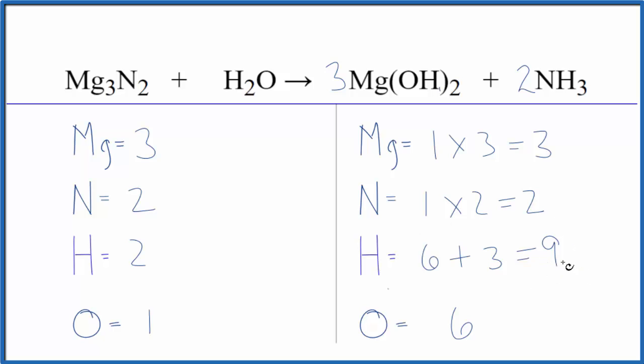Let's update the hydrogens again. So now we have two times one is two times three, that's six plus two times three is six. So we have 12 hydrogen atoms.